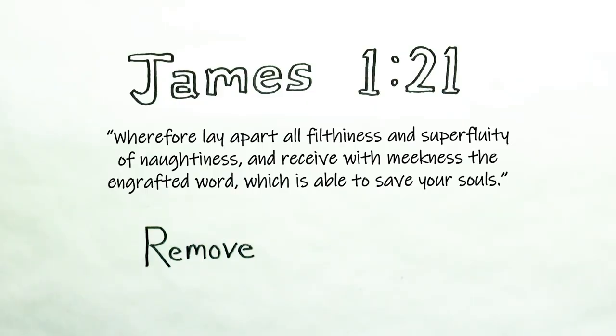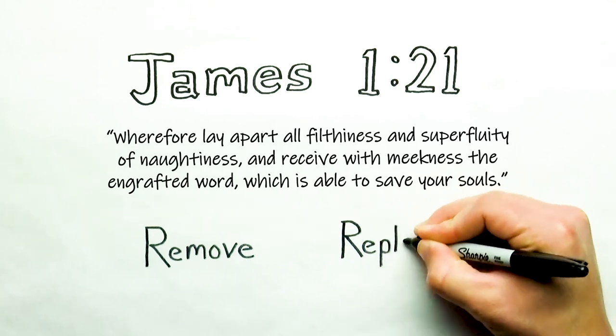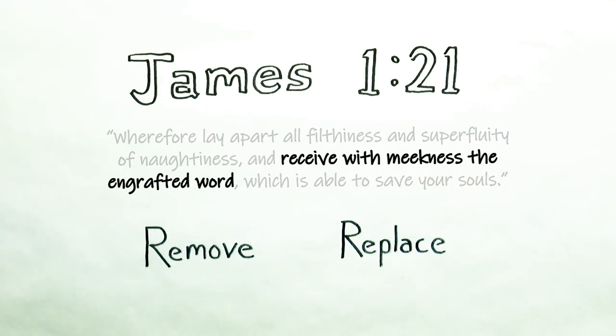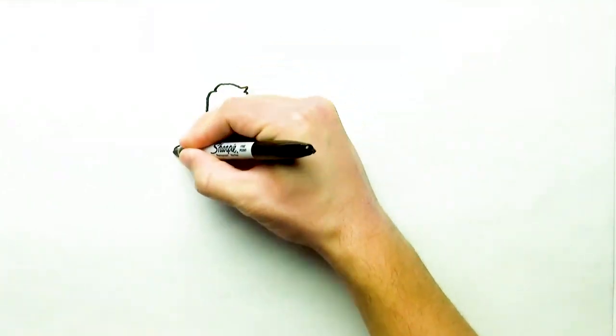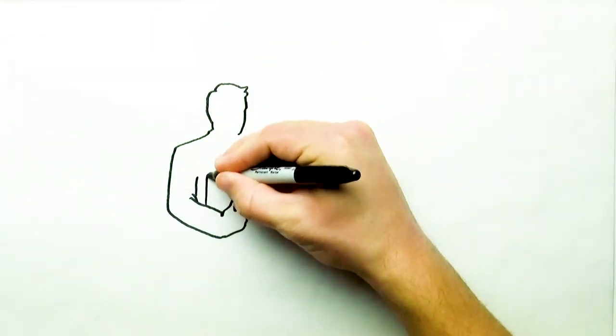The next thing identified in James 1:21 is what needs to replace those things we just removed. Receive with meekness the engrafted word. When we get rid of that which is impure, we want to replace it by that which is pure.